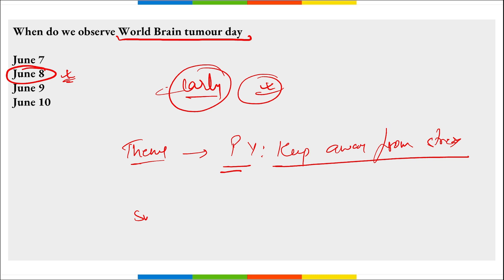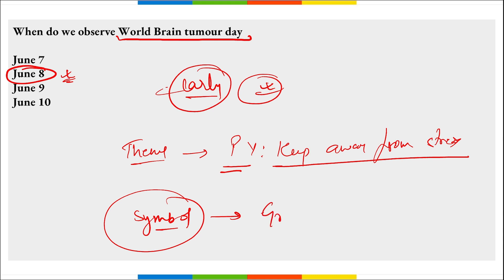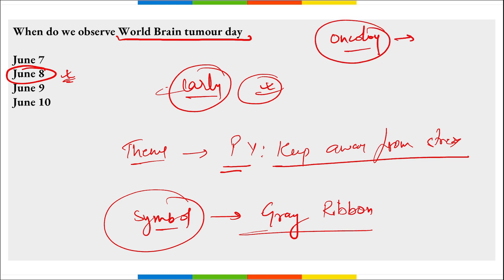The gray ribbon is the symbol that signifies brain tumors and brain cancers. Also remember, oncology is the study of tumors, and the person who studies oncology is known as an oncologist.